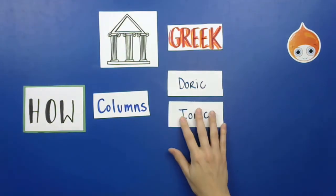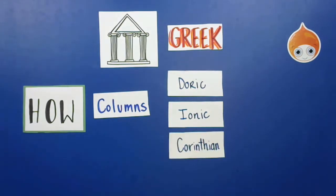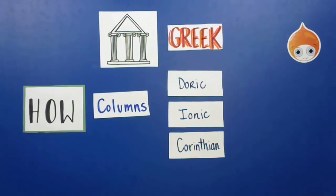The next column is the Ionic column — it's a little fancier. The word is still short, but Ionic sounds a little nicer than Doric. The last one is the Corinthian column, which is our fanciest column. It's the longest word and sounds very fancy. So those are the three columns to remember: Doric, Ionic, and Corinthian.